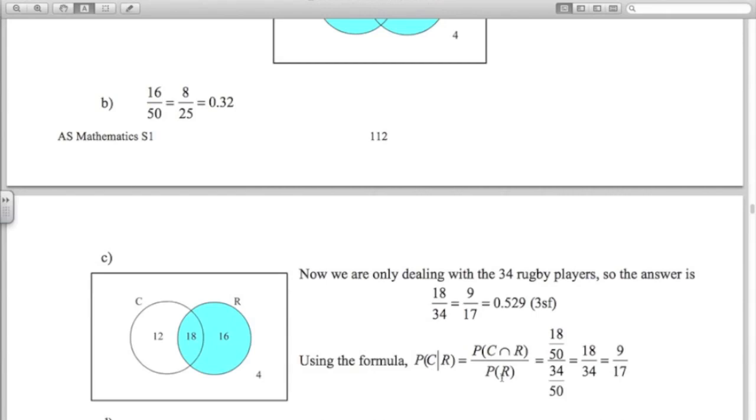Now, if we want to use the formula for that, what's the probability we get a cricket player given that they're a rugby player? So what's the probability they're a cricket and rugby player? That's 18 out of 50. What's the probability they're a rugby player? 34 out of 50. You can see we get the same answer using the formula.